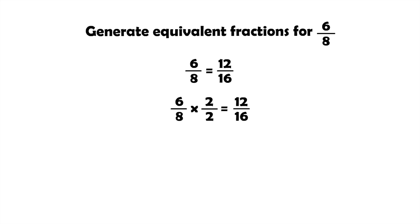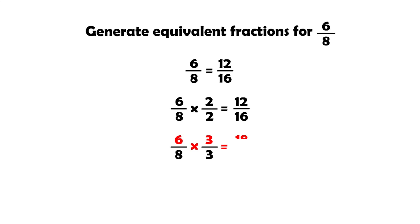We can also multiply six eighths by three thirds. Six times three equals eighteen, and eight times three equals twenty-four. So another equivalent fraction to six eighths is eighteen twenty-fourths.